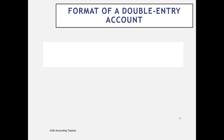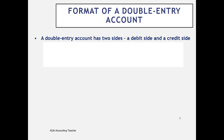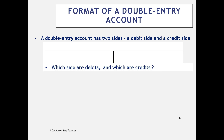The format of a double entry account — we call them T-accounts because they look like the letter T — has two sides: a debit side and a credit side. Think of debits as pluses and credits as minuses; all we're doing is recording transactions. For every transaction, there needs to be a debit and a credit. Debits go on the left, credits go on the right.